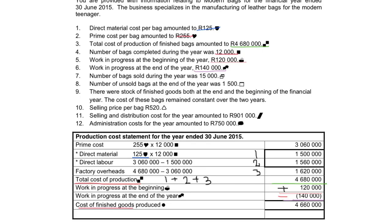When doing these calculations, it is very important to determine what information was given. For primary cost, they gave us direct material but not direct labor, so we subtract direct material from the primary cost total to get direct labor. Normally they will give you the overheads or enough information to calculate them. In this exercise, overheads were not given but the total cost of production was, so we take the total cost of production and subtract the primary cost to get factory overheads.